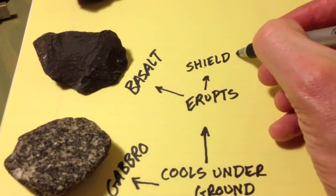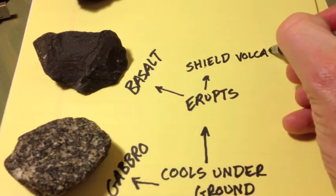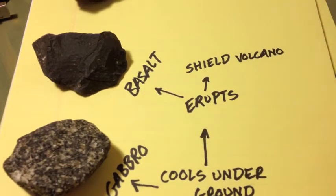When basalt erupts, it can make shield volcanoes, the type of volcano we've been talking about, like the Hawaiian Islands.